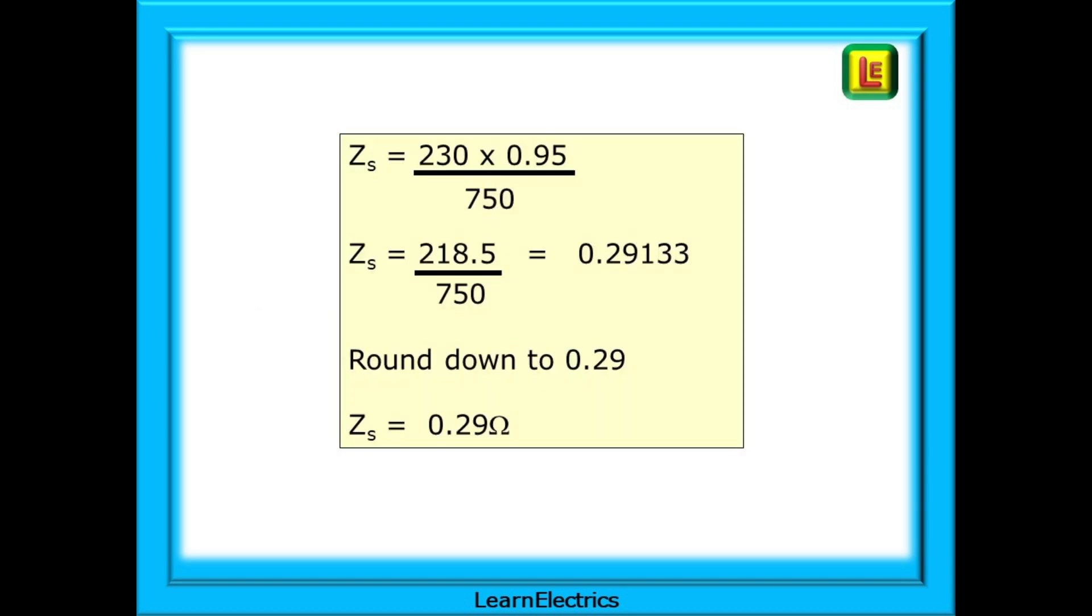Putting the numbers into the equation, we have 230 volts multiplied by 0.95 and then divided by Ia, which in this case is 750 amps. The calculator gives us 0.29133, which we can round down to two decimal places to arrive at 0.29. Ohm's law tells us the voltage divided by current will give us ohms. So, our answer is ZS equals 0.29 ohms.